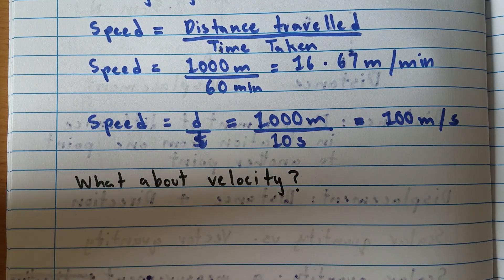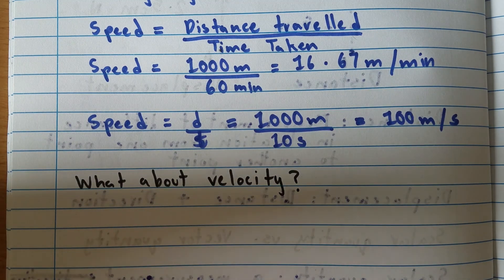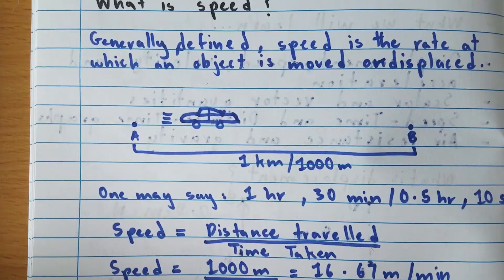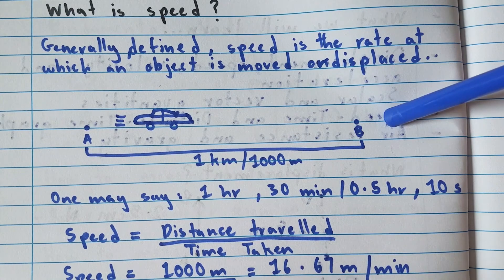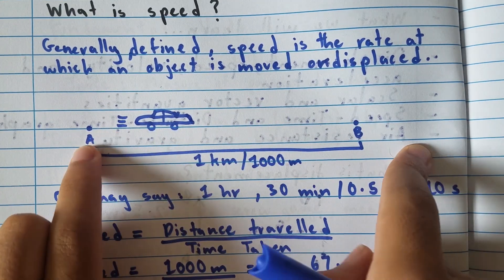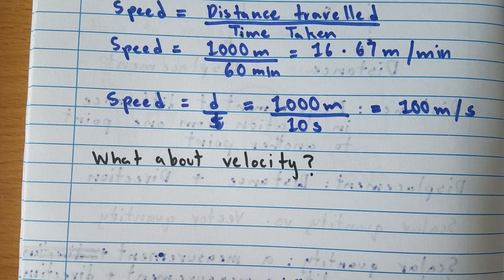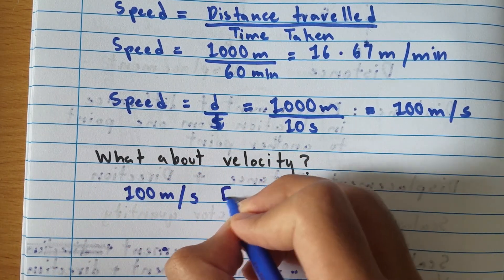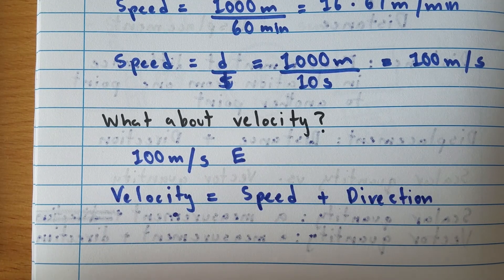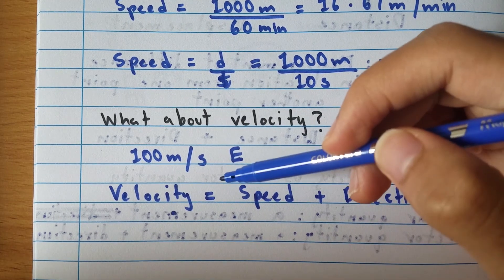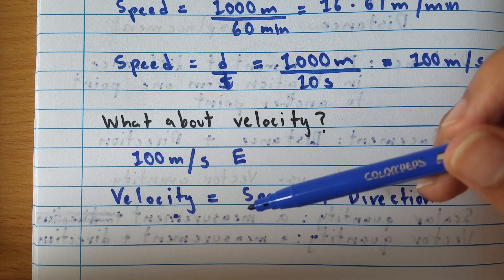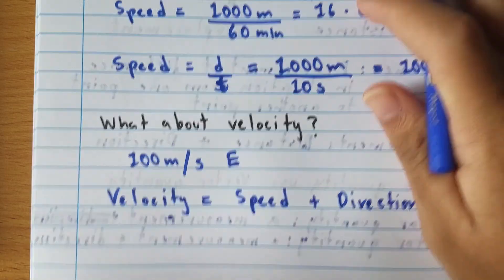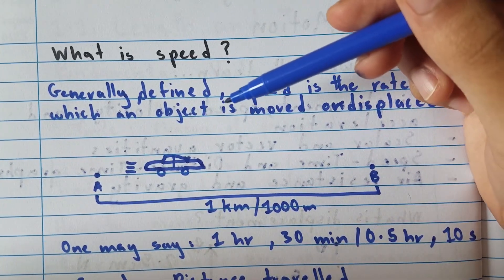Now let's talk about velocity. Velocity is simply speed but with a direction. Say this car has a velocity from A to B, and its speed was 100 meters per second. Since it's traveling from A to B — eastbound — we can say it has a velocity of 100 meters per second east. So velocity is speed plus a given direction, making it a vector quantity. Speed, on the other hand, is a scalar quantity because there is no direction.